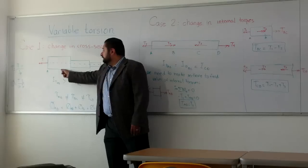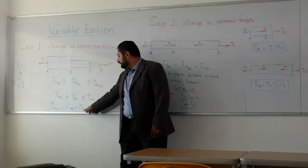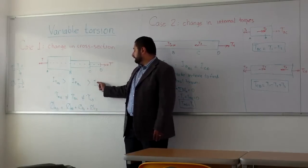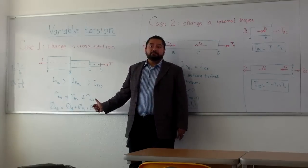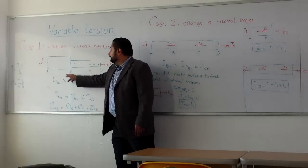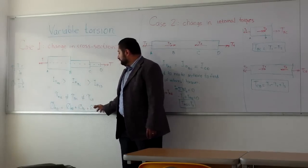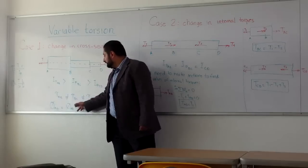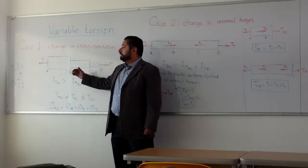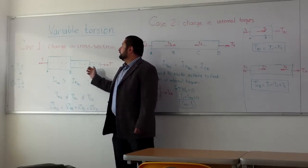The total angle between A and D is going to be the sum of the angle of segment AB plus the angle of segment BC plus the angle of segment CD. An important fact that you need to remember is that this is a sum and the sign is important because it will indicate you how the bar is deforming.